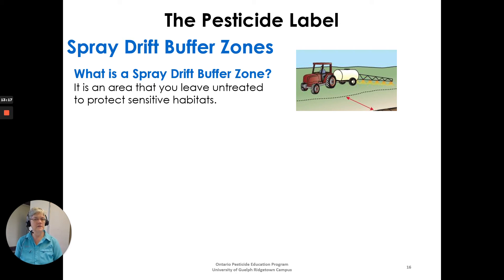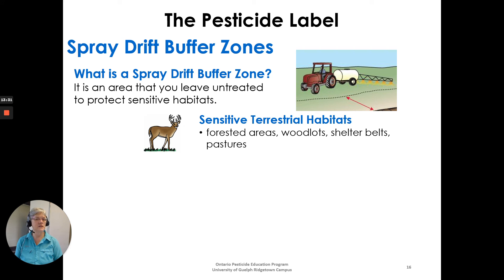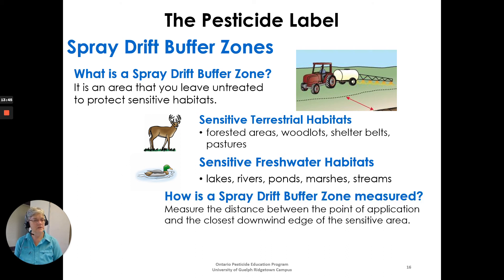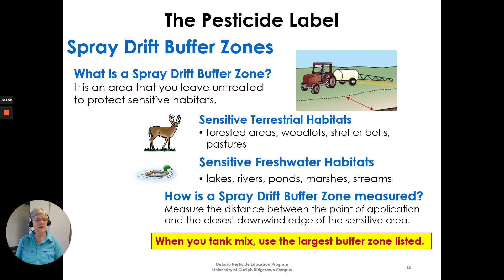A spray drift buffer zone is an area left untreated to protect sensitive habitats — which could include terrestrial habitats such as forested areas, woodlots, shelter belts, and pastures, or sensitive freshwater habitats such as lakes, rivers, ponds, marshes, and streams. The buffer zone is measured as the distance between the point of application and the closest downwind edge of the sensitive area — downwind is key. If you tank mix, use the largest buffer zone listed on either label.